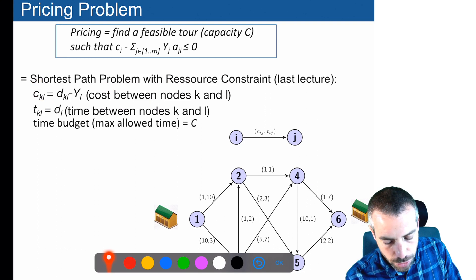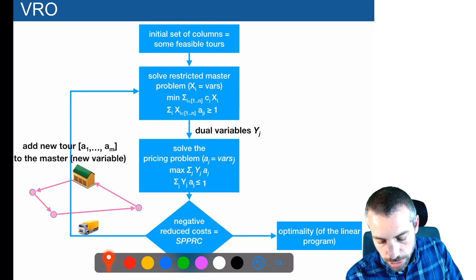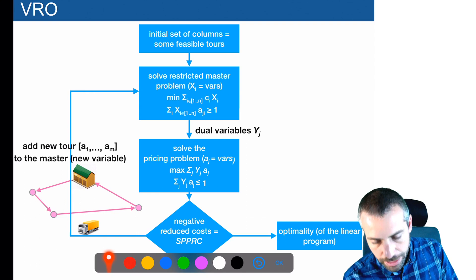We want to solve a shortest path problem with resource constraint as the pricing problem to generate a new column in the vehicle routing problem with the column generation approach. The final algorithm is: start with an initial set of feasible solutions, solve the restricted master problem, collect the dual variables, solve the pricing problem as a shortest path with resource constraint, and if a negative reduced cost is found, add the column to the master problem; otherwise, stop and prove optimality.